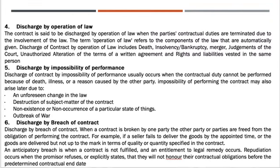Discharge by breach of contract: when a contract is broken by one party, the other party or parties are freed from the obligation of performing the contract. For example, if a seller fails to deliver the goods by the appointed time, or the goods are delivered but not up to the mark in terms of quality or quantity specified in the contract. An anticipatory breach is when a contract is not fulfilled and an entitlement to legal remedy occurs. Repudiation occurs when the promisor refuses or explicitly states that they will not honor their contractual obligation before the predetermined contractual end date.